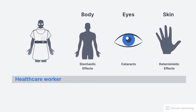The annual effective dose limit to the whole body is 50 millisieverts. The purpose of this limit is to minimize the probability of stochastic effects like cancer. The limit to the lens of the eye is 150 millisieverts for the year, and the purpose of this limit is to prevent radiation-induced cataracts.